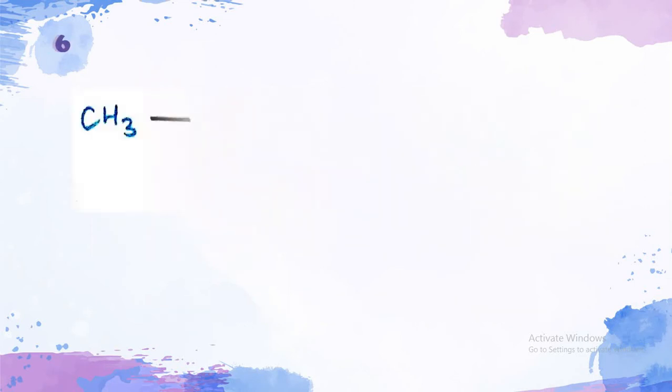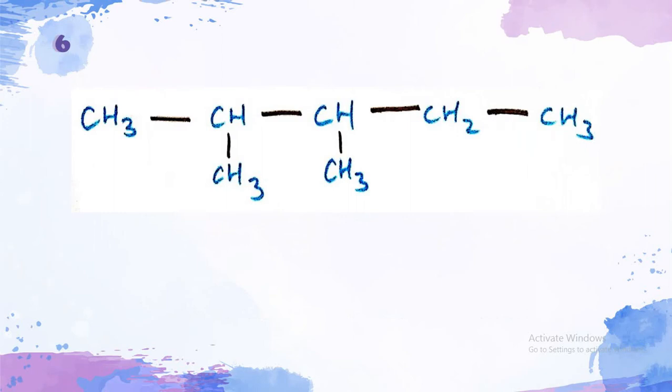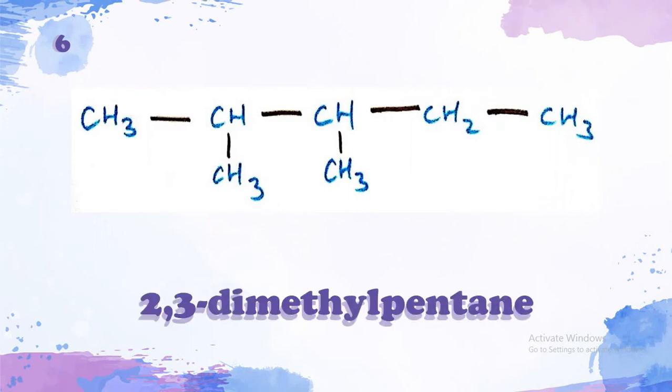Let's go to the sixth isomer. The sixth isomer has 2 methyl branches at the second and the third carbon atom of its main chain which is a pentane. So, it's called 2,3-dimethyl pentane.